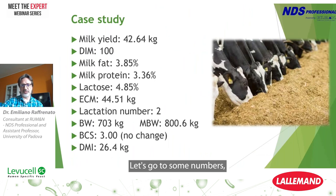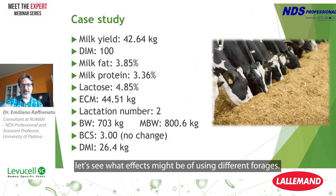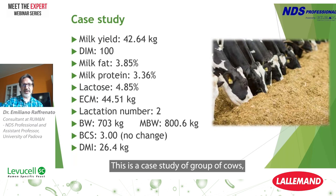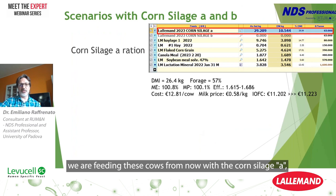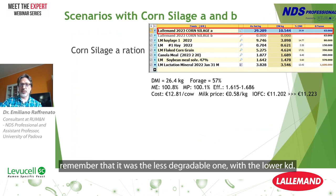Let's go to some numbers and see what the effects might be of using different forages. This is a case study of group cows. We are feeding this cow now with corn silage A — remember that it was the less degradable one, the one with the lower KD.